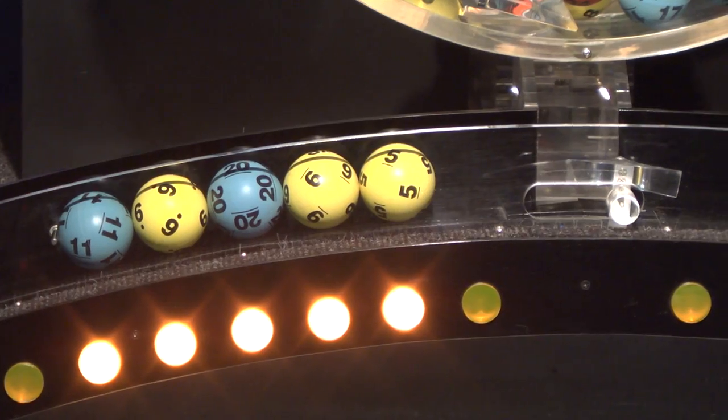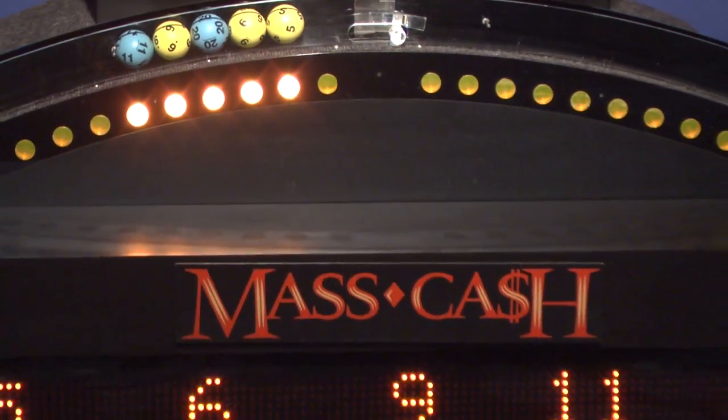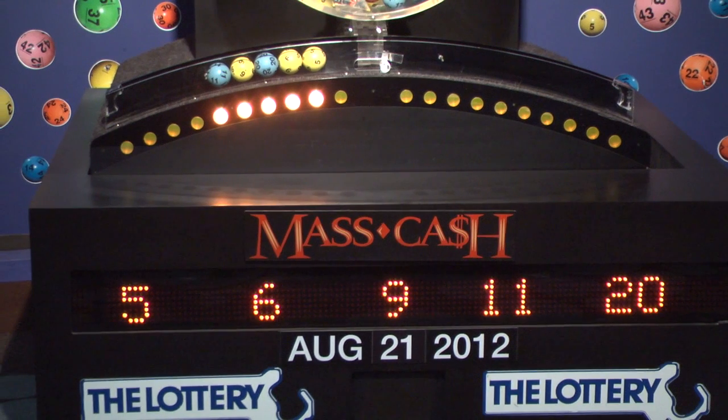Once again the winning MassCash numbers for Tuesday, August 21st, are 5, 6, 9, 11, and 20.